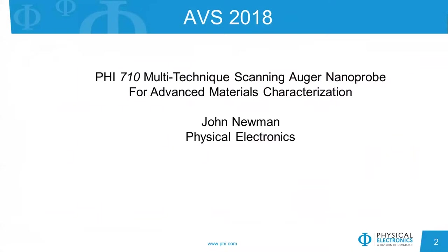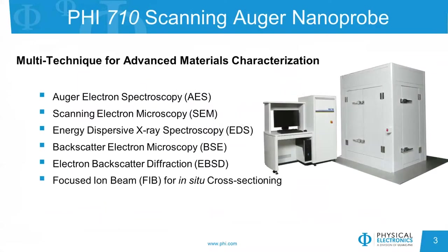Besides the traditional Auger and scanning electron microscope SEM feature on the Auger system, we also are adding energy dispersive x-ray spectroscopy or EDS, backscatter electron microscopy BSE, electron backscatter diffraction EBSD, and finally a focused ion beam or FIB, so that we can do in-situ cross-sectioning of samples.